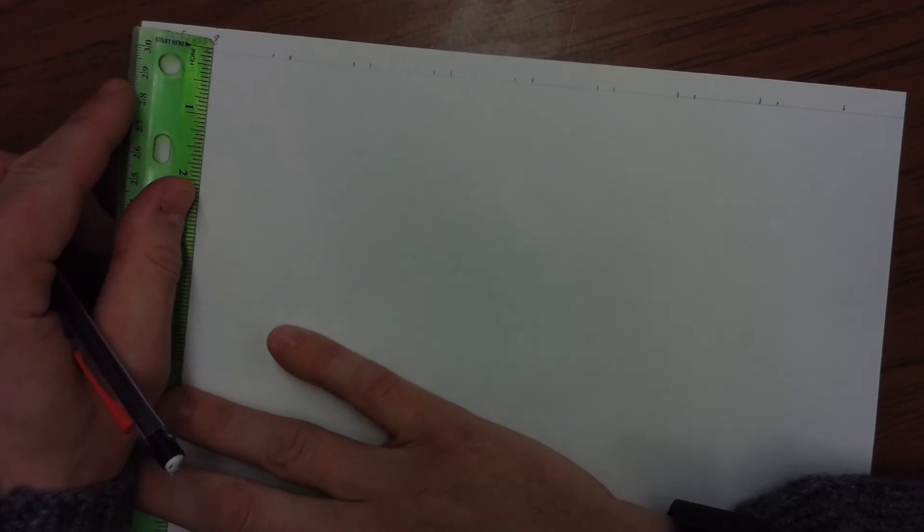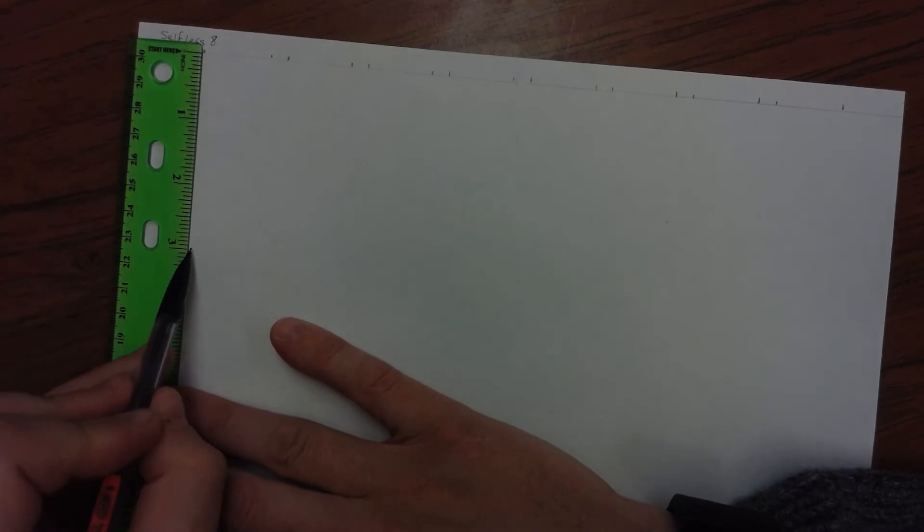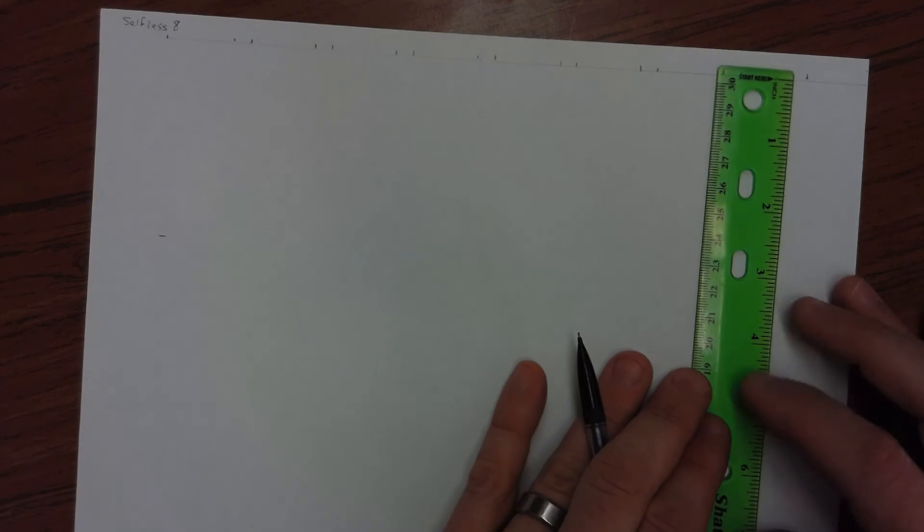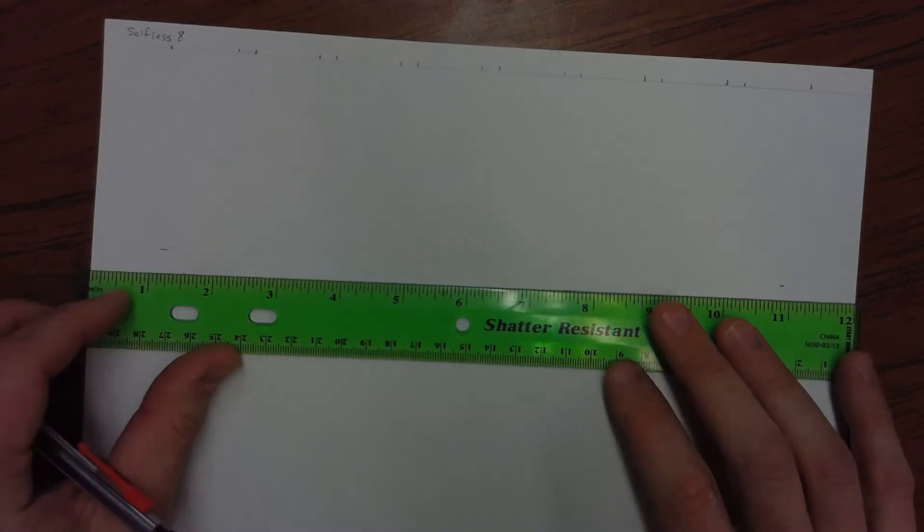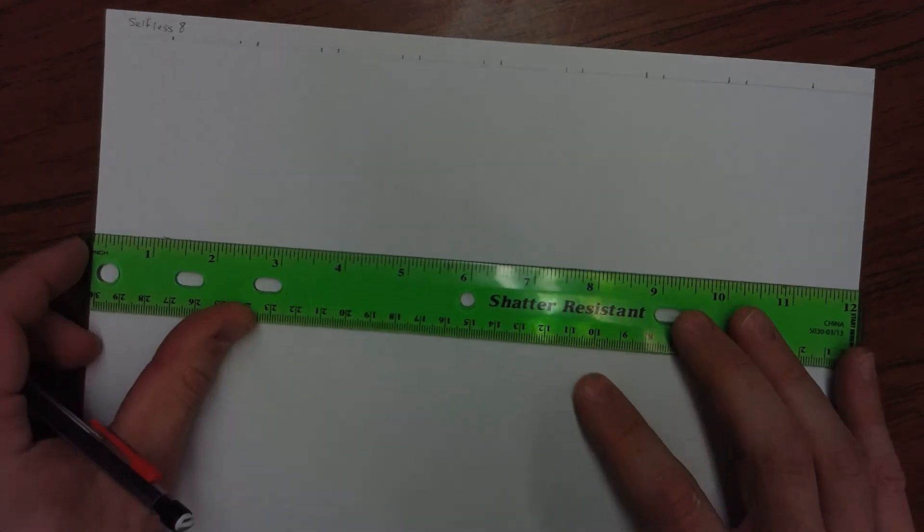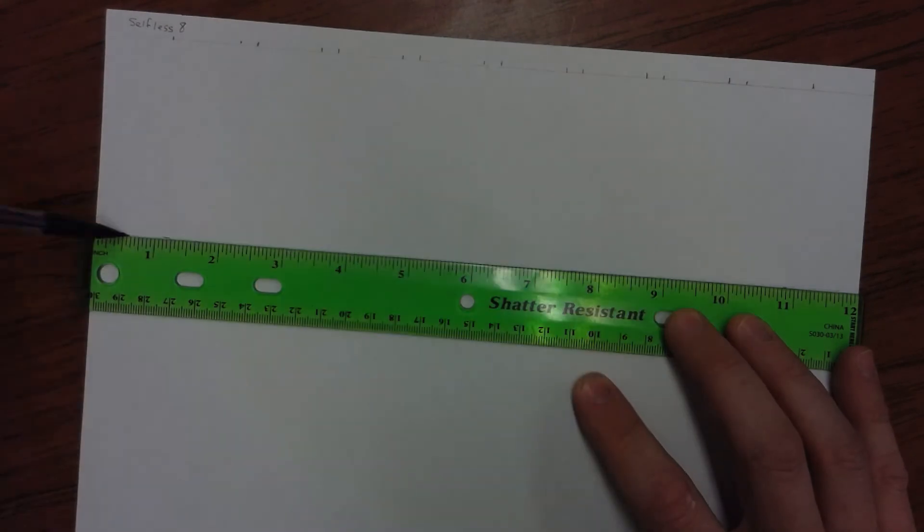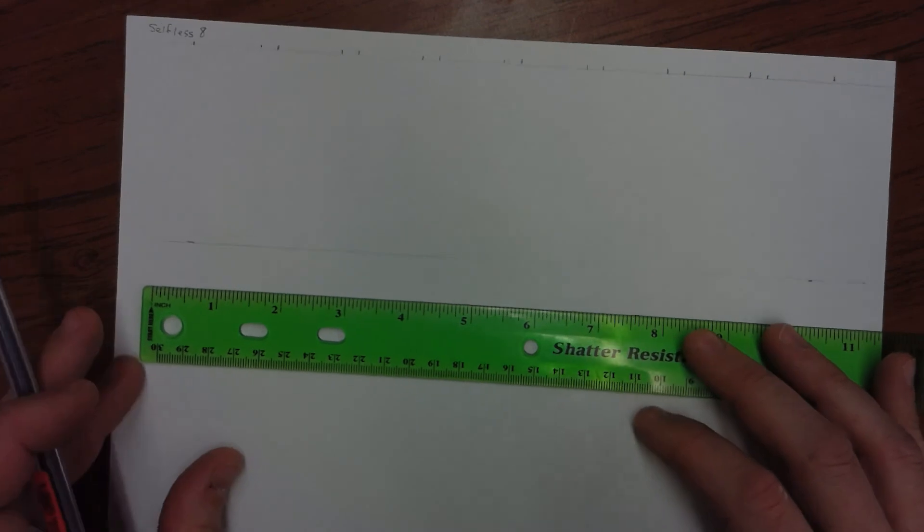I'm going to measure it down from my line. Three inches. Put a mark. Down from my line, three inches. I'm going to connect those two marks. The very light line, this line will go away. So I want to get rid of as much of it as I can.